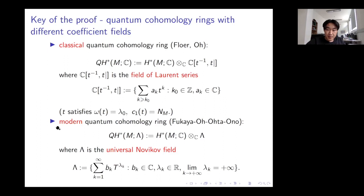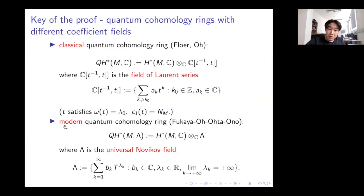Recent developments in Floer theory suggest working with the universal Novikov field instead of Laurent series. The universal Novikov field consists of formal series where bₖ are complex numbers and the formal variable T has a real exponent tending to plus infinity. I call this version the modern quantum cohomology ring. So we have two different quantum cohomology rings.